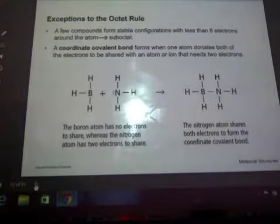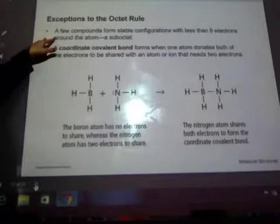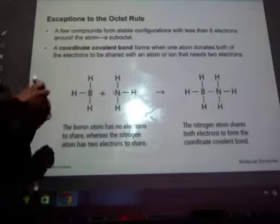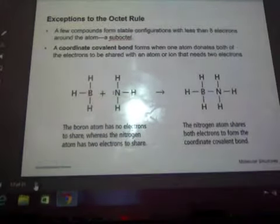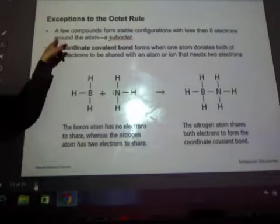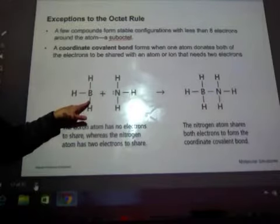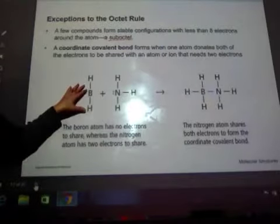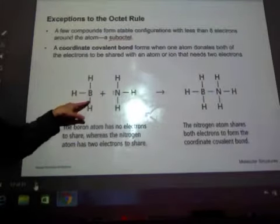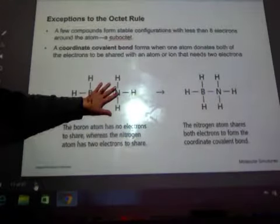So another example of how to fix this once in a while. A few compounds can become stable with less than 8. There's the, I said it's not a vocab word, but really it probably should be. Sub-octet means less than 8. So sometimes what will happen here, boron can only bond with 3 things. And I can have BH3. So that is a viable molecule. Boron would only have 6 valence electrons in that case.